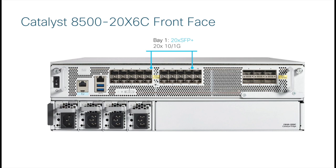You can see that there are 20 1/10 gigabit SFP-plus bays in bay 1. In addition to this, there are 6 100/40 gig QSFP28 interfaces in bay 0. All of these interfaces are enabled at all times in a non-blocking configuration without the need for any port licenses. This means that there are no bottlenecks between the interfaces and the data plane engines in the platform.